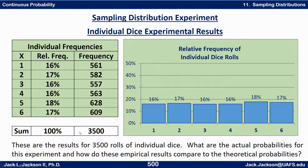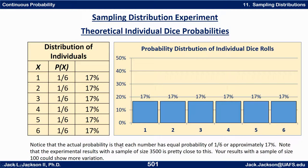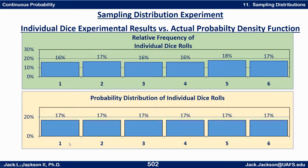For about 3,500 rolls, we got experimental data pretty close to the actual theoretical value. We should expect a probability of one-sixth, or approximately 16.6 repeating percent, each time. That's approximately what we got. So that's a good example of the law of large numbers.